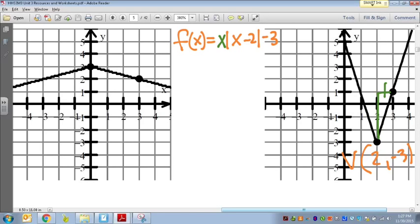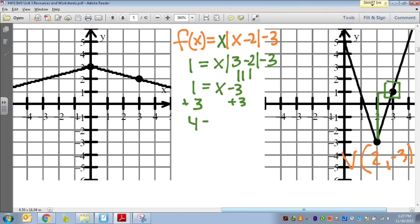Let's use the second point we're given at 3 comma 1 and plug it in and see what the multiplier is. So at 3 comma 1, this is what we would get. This is going to be 1 equals, the absolute value of 1 is 1. So 1x minus 3. If we add 3, that's going to give me 4 equals x.